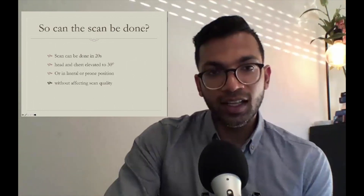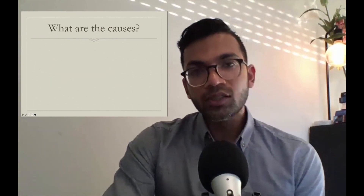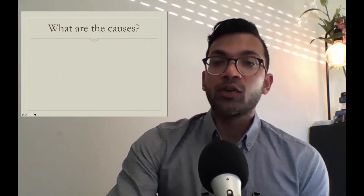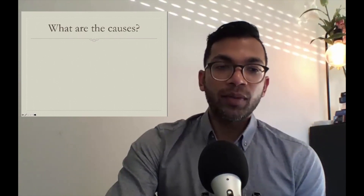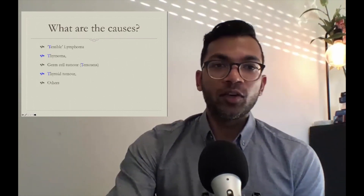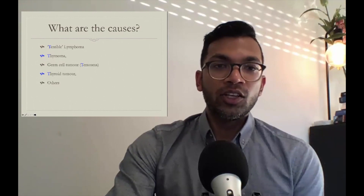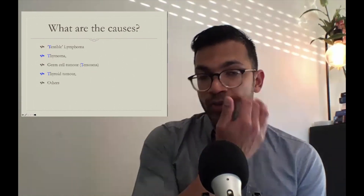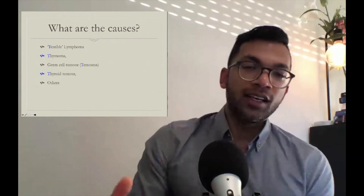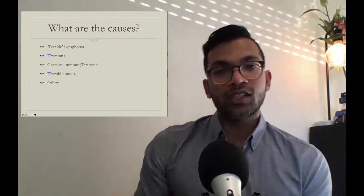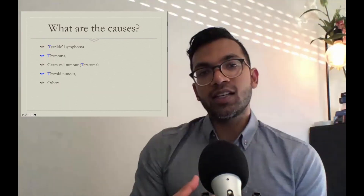What are the causes of mediastinal mass? We talk about the four T's: terrible lymphoma, thymoma, germ cell tumor or teratoma, and thyroid tumor — but there are also others. Another good way of categorizing this would be to think of the structures in the mediastinum.